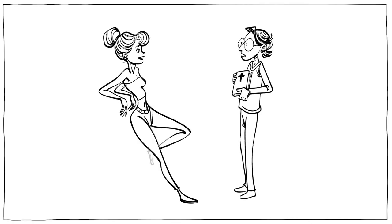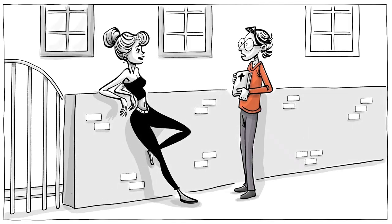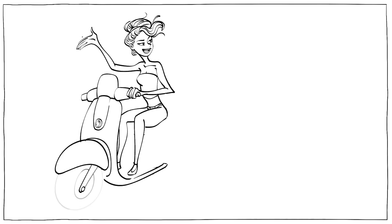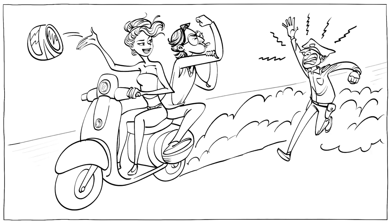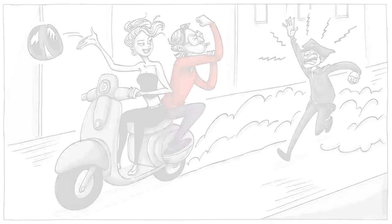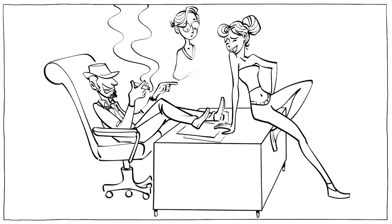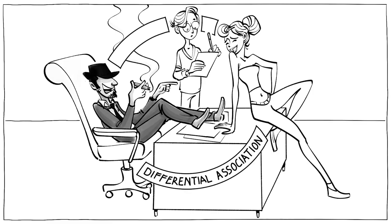When people socialize with the wrong crowd, bad things can happen. They may form questionable values and develop poor attitudes toward law and order. And if their friends are criminals, they naturally learn from them and over time adopt their way of life. Psychologically, this process is known as differential association.